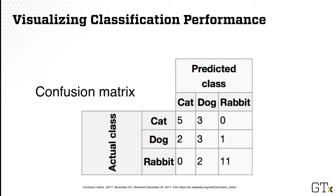For example, in the first row, the true label is cat — there are eight of them. We can see that five of them are correctly classified and three are misclassified. Similarly, for the dog class, two are misclassified as cat and one is misclassified as rabbit. So all the cell values are showing us exactly how many are correct and how many are wrong.